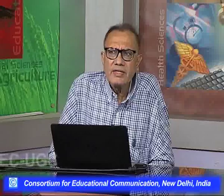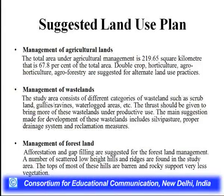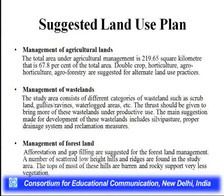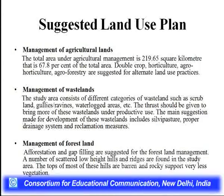Soil health card data can also be used for proposing different types of land use. Different land uses suggested include: management of agricultural lands and wasteland. Total area under agricultural management is 219 square kilometers, covering approximately 68% of the total area. Double crop, horticulture, agrohorticulture, and agroforestry are suggested for alternate land use practices. For wasteland management, the thrust should be to bring wasteland under productive use through silvi-pasture, proper drainage, and reclamation measures. For forest land, afforestation and gap filling are suggested.